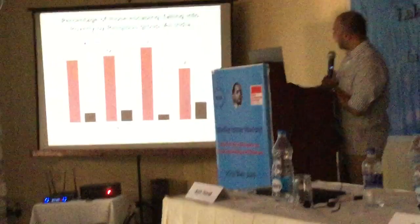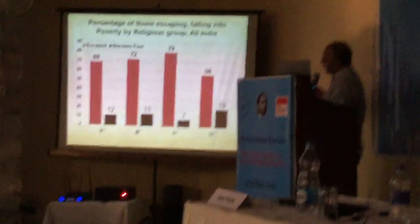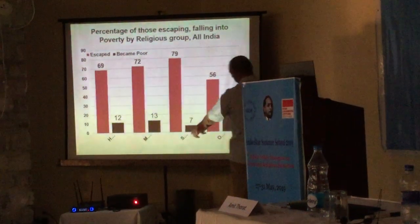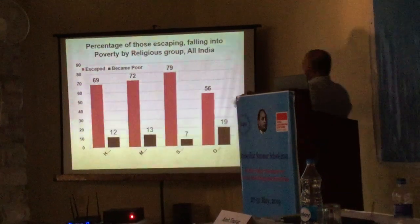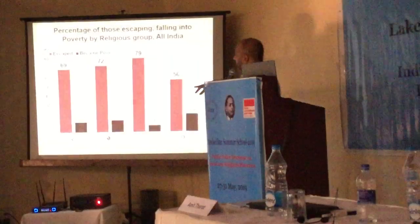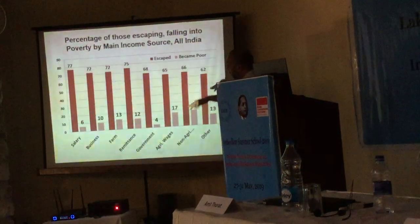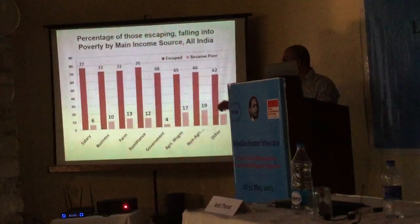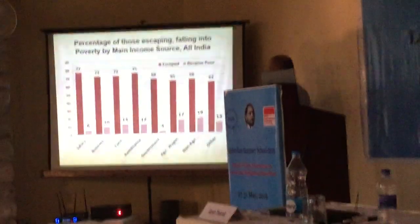Looking at the same analysis by religion — Christians and Sikhs have done much better than Muslims and Hindus in escaping poverty. Muslims have done slightly better than Hindus in escaping, but are also slightly higher in terms of falling back into poverty. By occupation, those with a salary, a business, farmland, or remittances are more likely to escape poverty, while those in agricultural or non-agricultural wages are also more vulnerable to falling back.